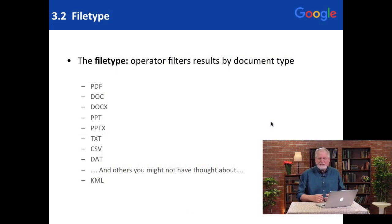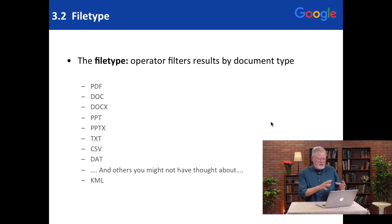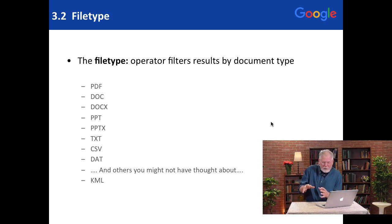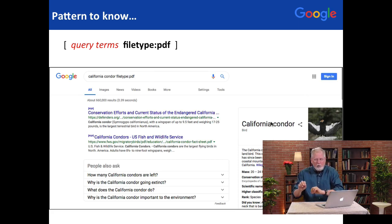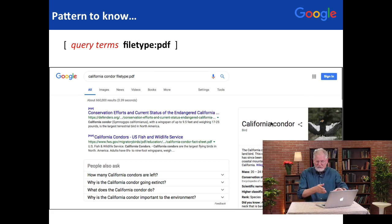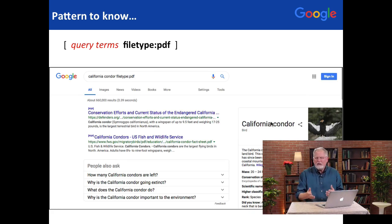The key idea is that the filetype operator allows you to say just give me PDFs, or just give me docs, or just give me KML files. The pattern is: query terms, then filetype colon, then whatever extension you want. For example, here we're saying just search for California Condor PDF files.